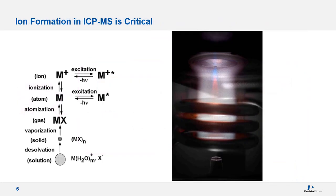To troubleshoot matrix interferences, you need to understand the processes occurring in the plasma. The first function of the high-temperature plasma is to desolvate the sample, leaving microscopic salt particles, as the aerosol droplet passes from the injector into the plasma. Some desolvation begins in the spray chamber and is affected by droplet size from the nebulizer. Next is vaporization of salt particles into gas molecules, then dissociation into atoms, occurring predominantly in the preheating zone. The remaining plasma functions are excitation and ionization, occurring in the initial radiation zone and the normal analytical zone.